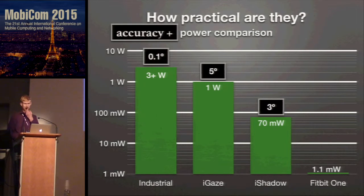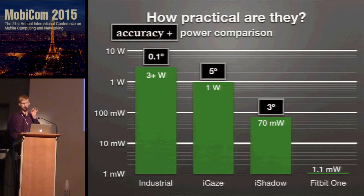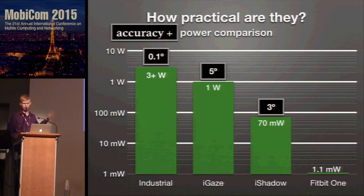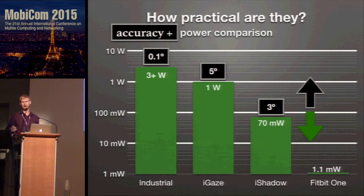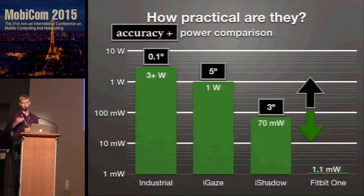The story gets more complicated when we talk about accuracy — specifically eye tracking accuracy, meaning how incorrect you are when measuring the position of someone's eye, usually measured in degrees. Industrial trackers achieve about a tenth of a degree of error. Eye Gaze and Eyeshadow are at five and three degrees respectively. So we've set up an interesting challenge: increase accuracy while drastically decreasing power — two goals that are usually competing.